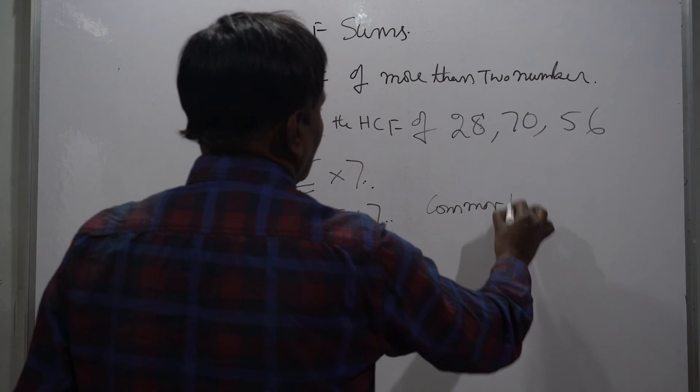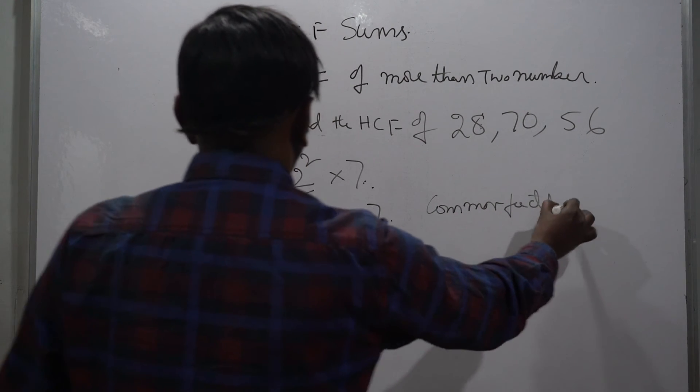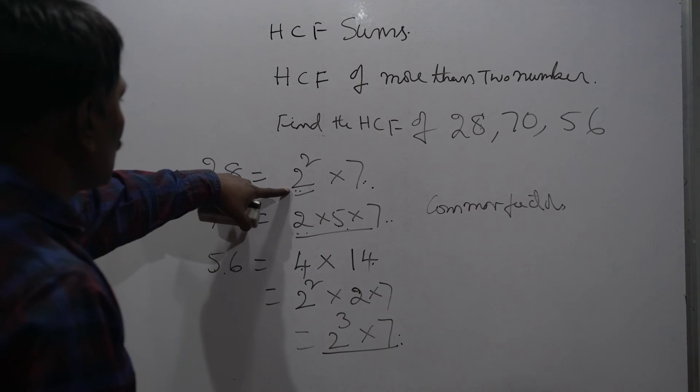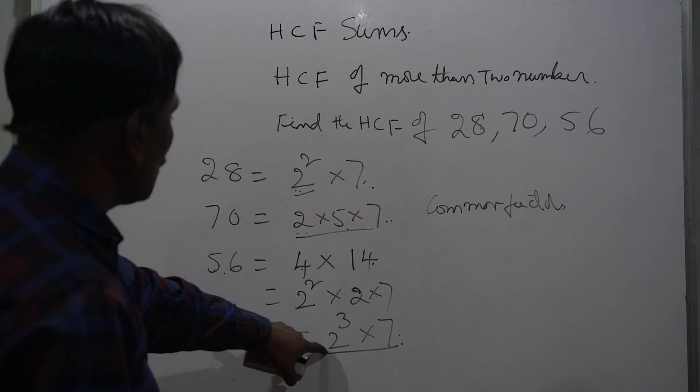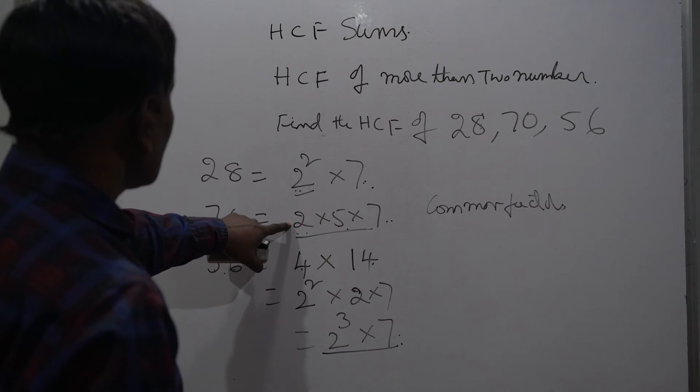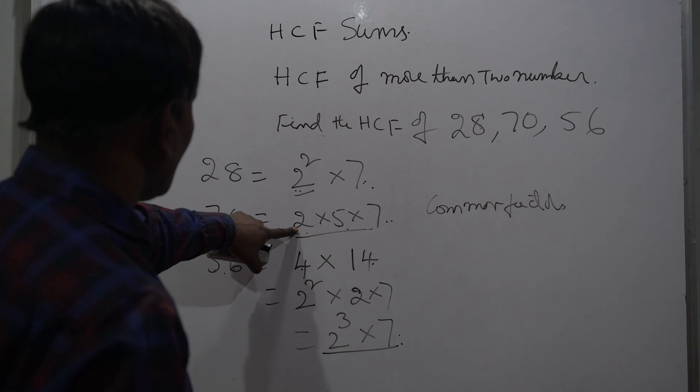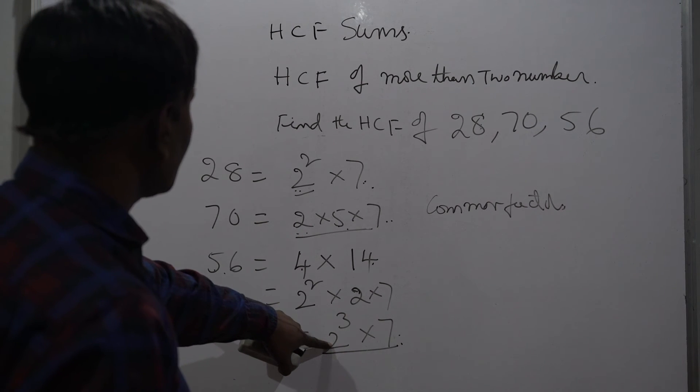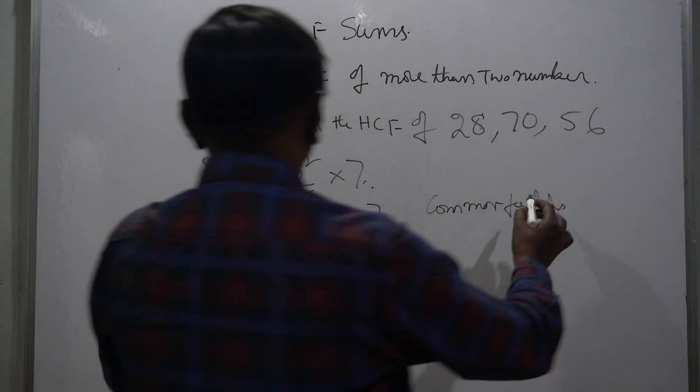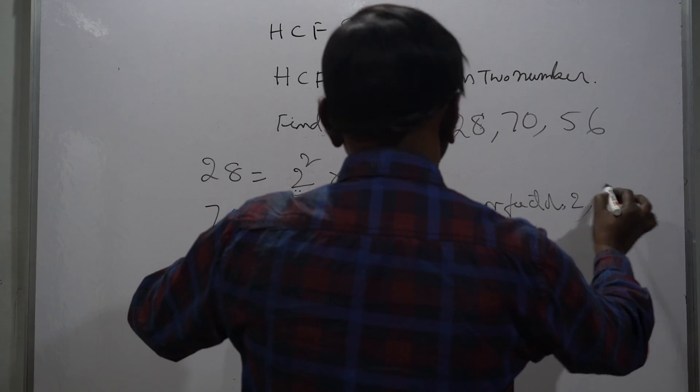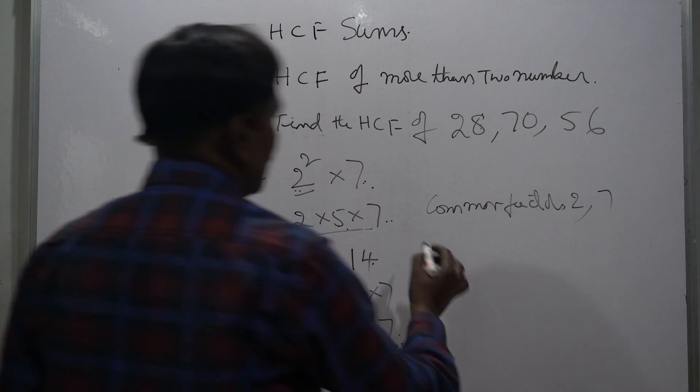What are the common factors? Here, 2 squared into 7, this is 2 into 5 into 7, this is 2 cubed into 7. So what is the common factor? Here 2 is there, and here 2 is there. Here 7 is there, here 7 is there. So the common factors are 2 and 7.